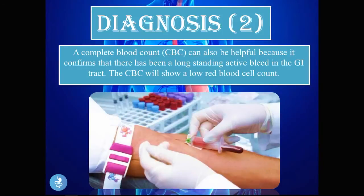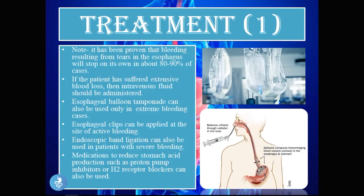A CBC (complete blood count) can also be helpful in diagnosis, as it confirms a long-standing active bleed in the GI tract. The CBC will show a low red blood cell count, reflecting that the patient has been bleeding from the GI tract for some time.